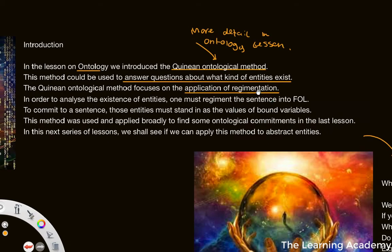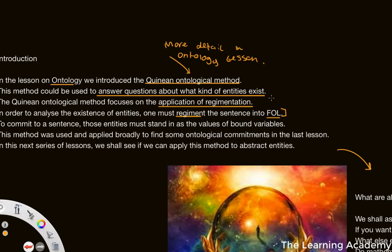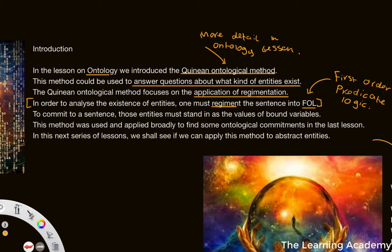Effectively, the Quinean method for ontology can be used to try and determine our ontological commitments — to try and work out the kinds of questions about what entities exist. It focuses on the application of what Quine himself called regimentation. The definition of regimentation is that in order to analyse the existence of entities, one must regiment the sentence into first-order logic — first-order predicate logic, or FOL.